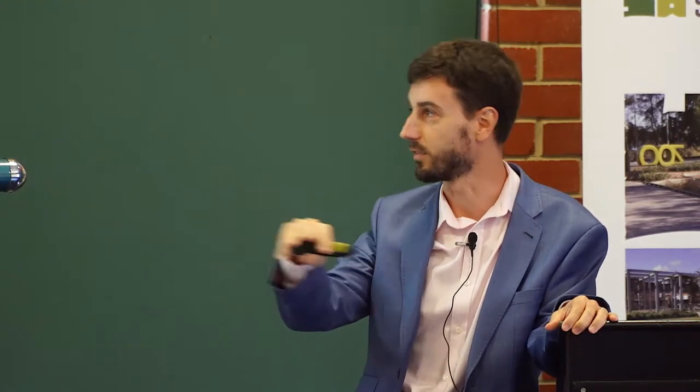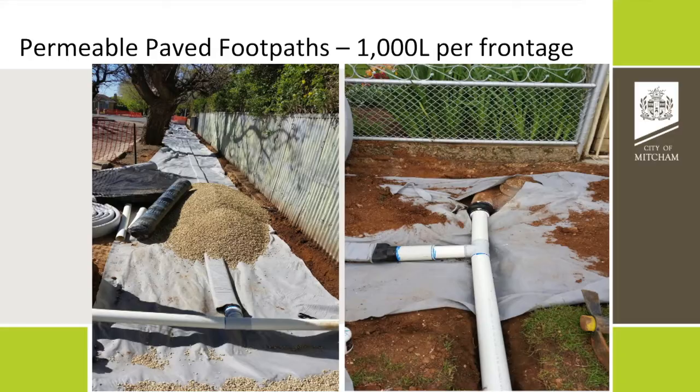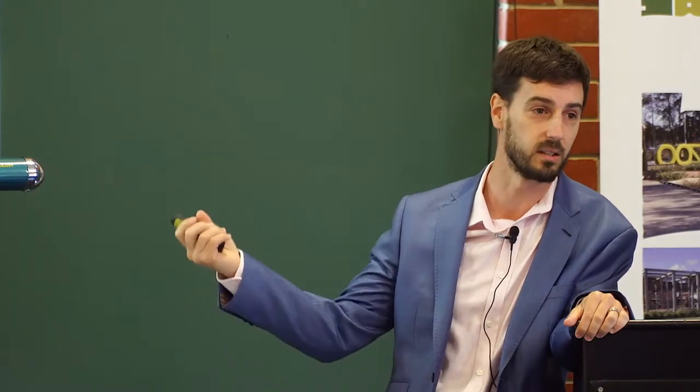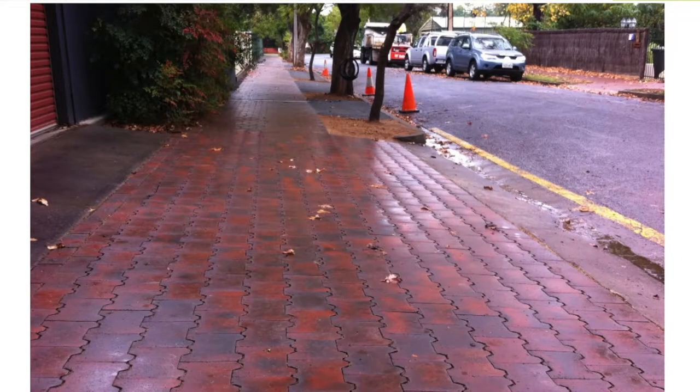One thing we've been doing opportunistically is — depending on the grade, because you still want a bit of fall to get water into it — we've been taking the residential downpipe connection, putting in a T, and dropping it into the Megaflow and running that under the footpath. On a typical footpath, say 100mm thick base with screenings over 20 metres, you're getting about 1,000 litres diverted into there in any rainfall event. If you're doing that across just 100 properties a year, it's like putting in 100 rainwater tanks under the verge as retention.